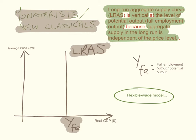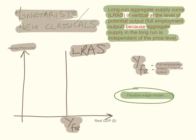The long-run aggregate supply curve is perfectly inelastic — it is independent of the average price level. YFE stands for the full employment level of output, or the potential output of the economy. This model is sometimes called the flexible wage model, because they believe that in the long run, wages and prices are flexible and should adjust to always bring the economy back to its long-run equilibrium, which is the full employment level of output.